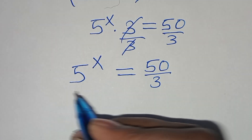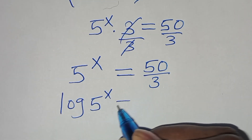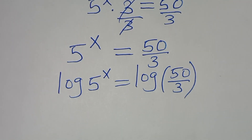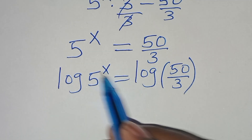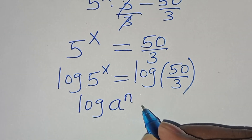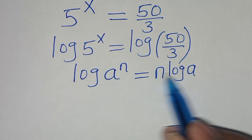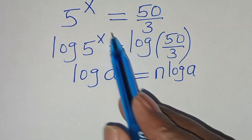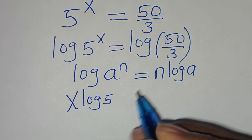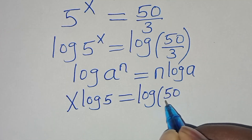So for x here, we introduce logarithm, so we have log of 5 to the power of x, this is equal to log of 50 over 3. You find that log of 5 to the power of x is in the form of log of a to the power of n, which can be expressed as n times log a. Applying this power rule property, then log of 5 to the power of x becomes x times log 5, this is equal to log of 50 divided by 3.